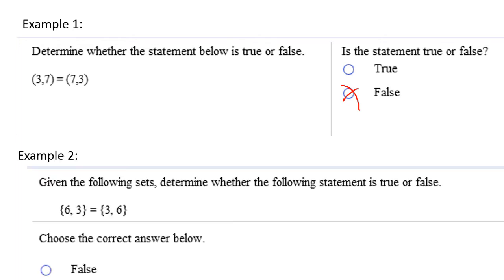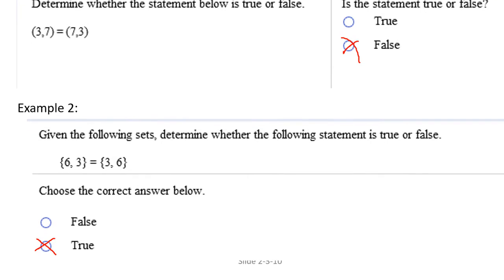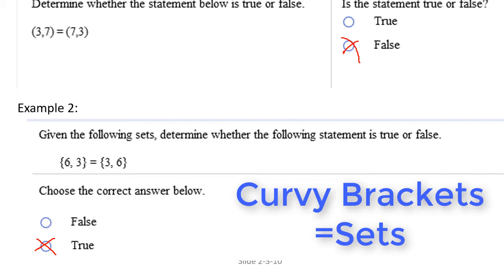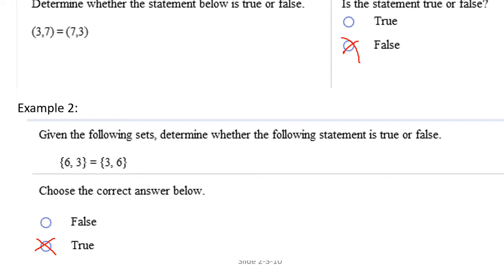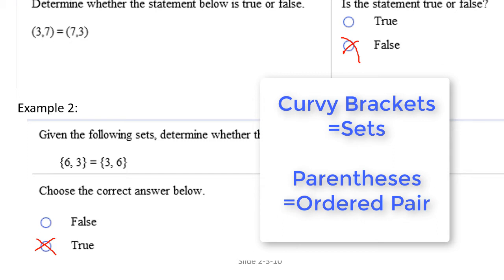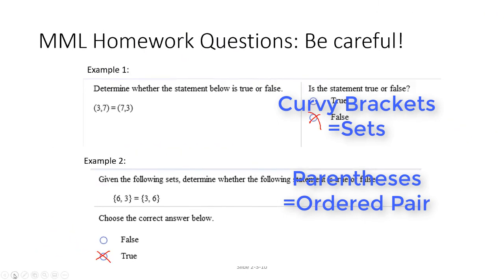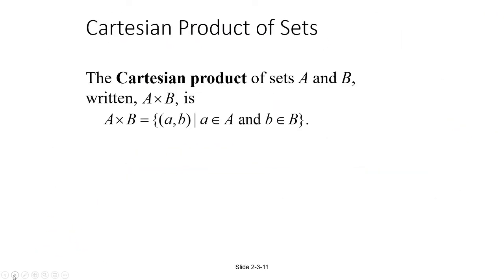Be very careful because we're also working with sets, and some sets only have two numbers in them — I don't want you to confuse those with ordered pairs. With sets you have the curly brackets. So if I ask you if the set {6, 3} is equal to the set {3, 6}, the answer would be true, because in sets the order doesn't matter. So it's an important distinction: the parentheses notation indicates an ordered pair, while the curly bracket notation indicates a set. What we're going to do with these ordered pairs is form sets of ordered pairs by starting with sets that are not ordered pairs.